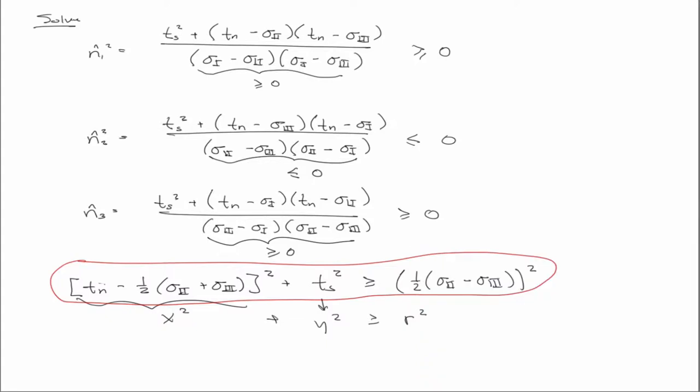There was a really small error in this n3 hat squared solution. This should actually be sigma 1 minus sigma 3.